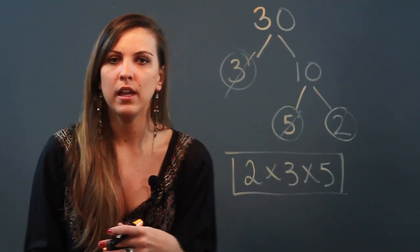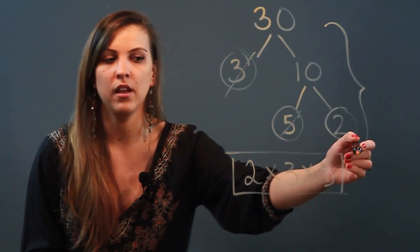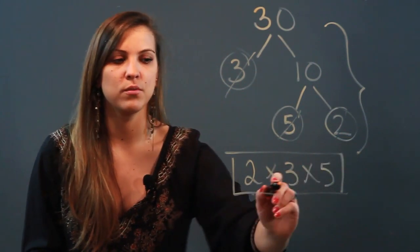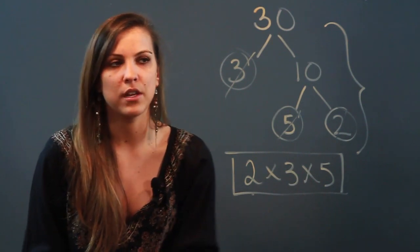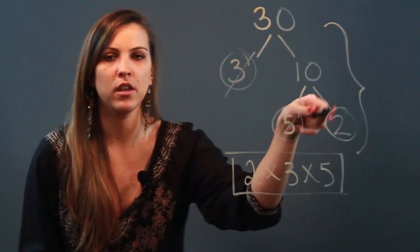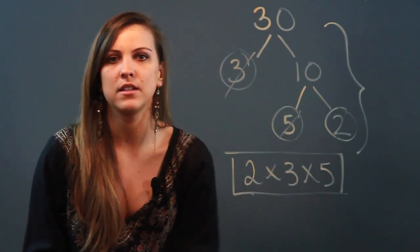The factor tree was the method we used to get there. This whole method is called the factor tree, but the final answer, 2 times 3 times 5, is the prime factorization. The difference is that the factor tree is the method we use, and the prime factorization is the number broken out into its prime factors.